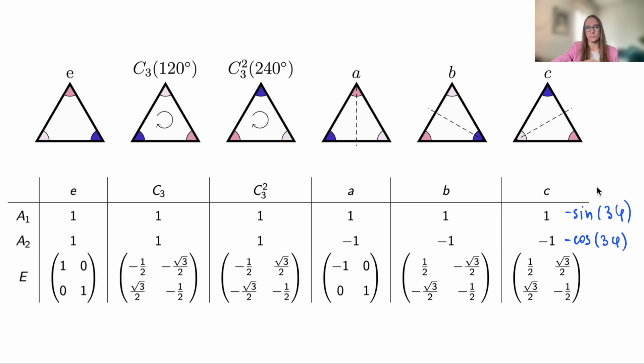Indeed, sine remains unchanged under all group operations. It is simply multiplied by one. Meanwhile, cosine changes sign under reflections, meaning it is multiplied by minus one. Here we also listed the rotation matrices that describe how functions like x and y transform or functions like xy plus yx and x squared minus y squared and actually many others.